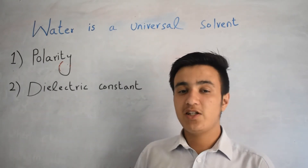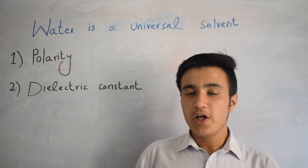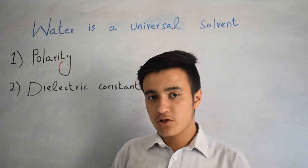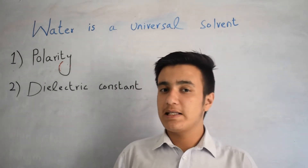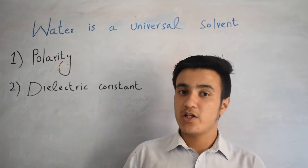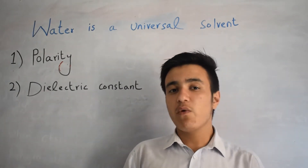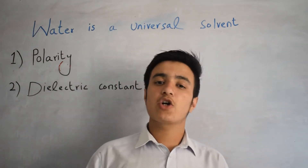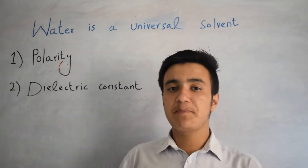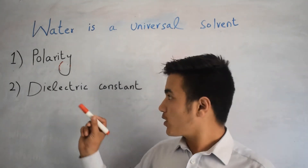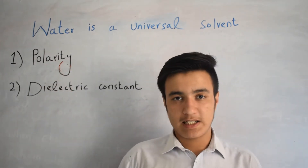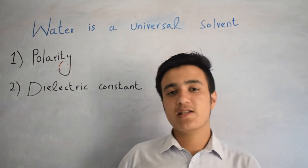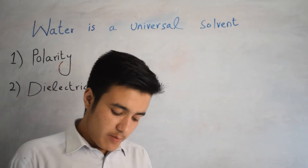We say that water is the universal solvent. Universal solvent means that a major variety of compounds dissolve in water, that's why it is known as a universal solvent. Today you will learn how we call water a universal solvent. There are two reasons — two properties present inside water — and those two properties are polarity and dielectric constant.